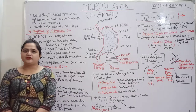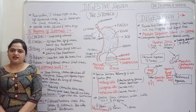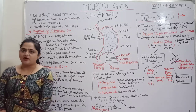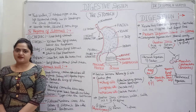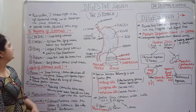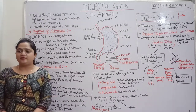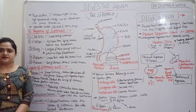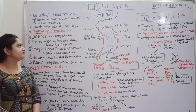Hello viewers, myself Dr. Deepmala Verma. Today I will start the stomach. Stomach is the thick-walled organ, lies between the oesophagus and the part of the small intestine. Stomach is J-shaped, situated in the left side of the abdominal cavity. Stomach does not play a big role in absorption of any nutrients. It only absorbs water, alcohol and some drugs.